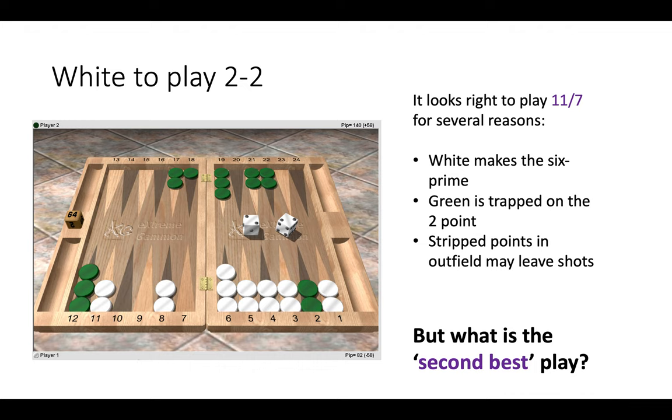Making the six-prime is just so strong. We want to make the six-prime most of the time over the board and completely trap our opponent. Green would be trapped on a two point, and we do not want to have the stripped points in the outfield that are going to be more difficult to clear. So playing those two checkers 11 to 7 looks obvious, straightforward. We make it without thinking. But again, what is the second best play here? What else could you do?